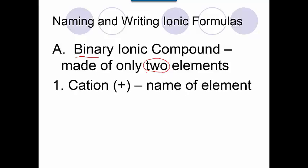In a binary ionic compound, there's always a positive element, and that's your cation. A cation is going to just get the name of the element the way it is right off the periodic table.